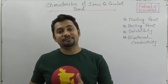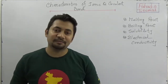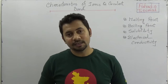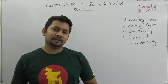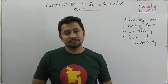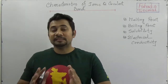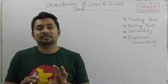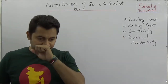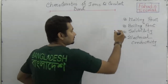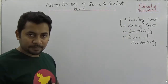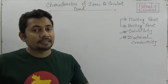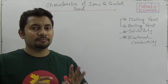Welcome to the class on characteristics of ionic and covalent compounds. This is probably the last class of this video series on chapter chemical bond. Hopefully after this video I shall be uploading some creative question-solving techniques. In this video I shall be focusing on explaining three things: melting and boiling points, solubility, and electrical conductivity — and why ionic compounds and covalent compounds are not the same.